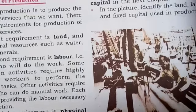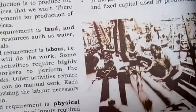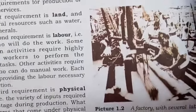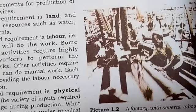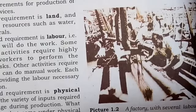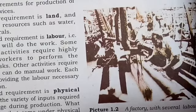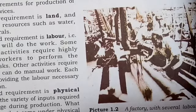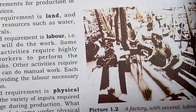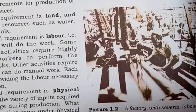The second topic is organization of production. For production there is a requirement of land, labor, and physical capital, also fixed capital. Land is the basic need for starting a business. Once a business is established and infrastructure of buildings is prepared, then there is a requirement of labor, and after labor, we need physical capital and fixed capital.